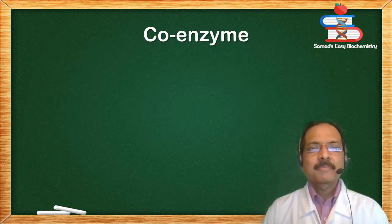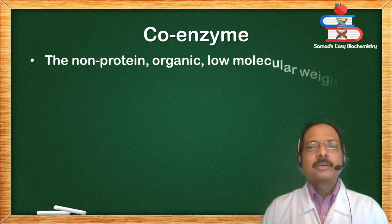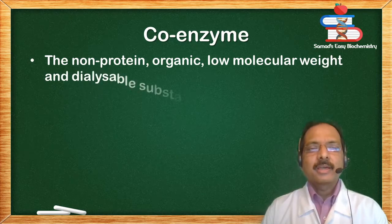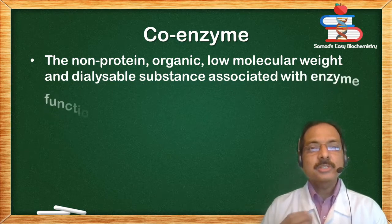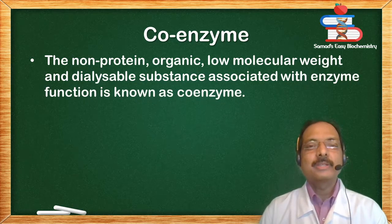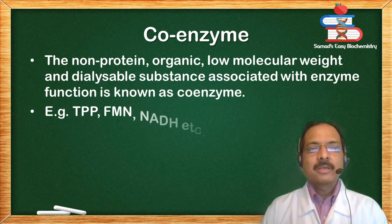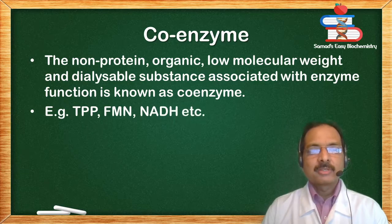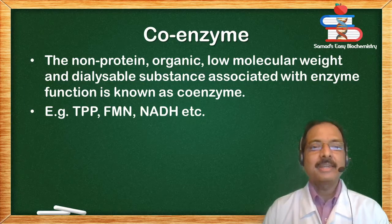Coenzyme: the non-protein, organic, low molecular weight and dialyzable substance associated with enzyme function is known as coenzyme. Examples include the active form of thiamine, i.e. TPP; the active form of flavin, FMN; and the active form of niacin, NAD⁺.